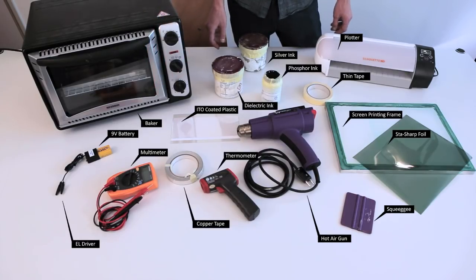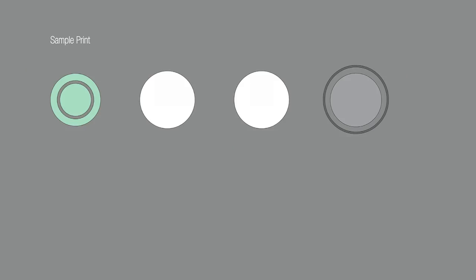For the first step, we'll be preparing the screen and screen printing materials. We'll be starting by making our designs for the print. On the left, you'll see the phosphor design. This is the basic part that will be illuminated on the screen.